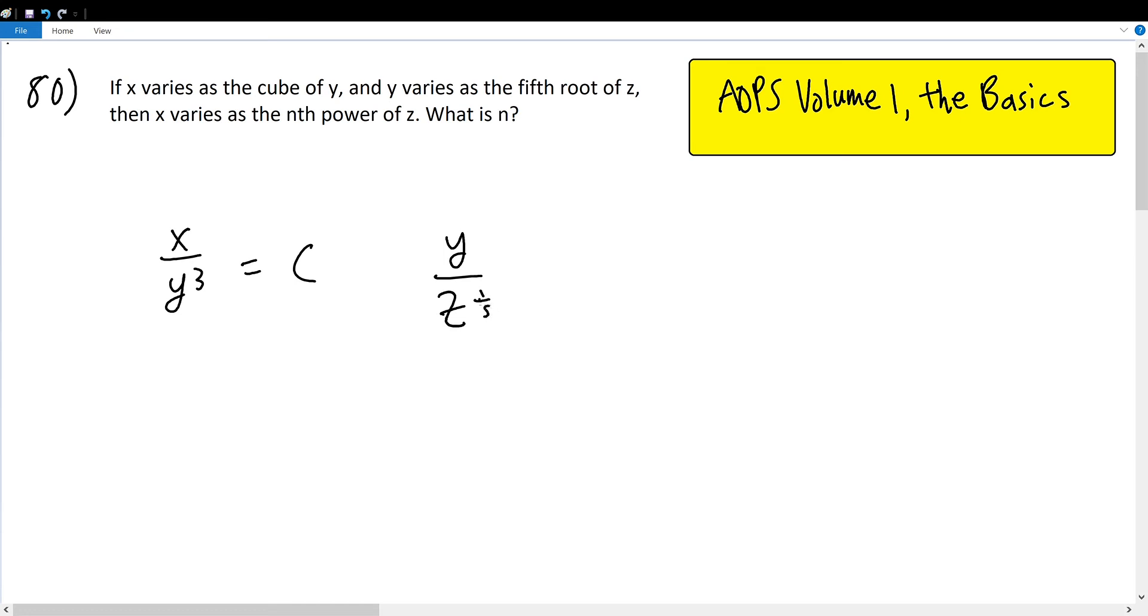And then x varies as the nth power of z. So what is n? So we're trying to find x over z raised to some n. And we have to find it in this form, given these two conditions.